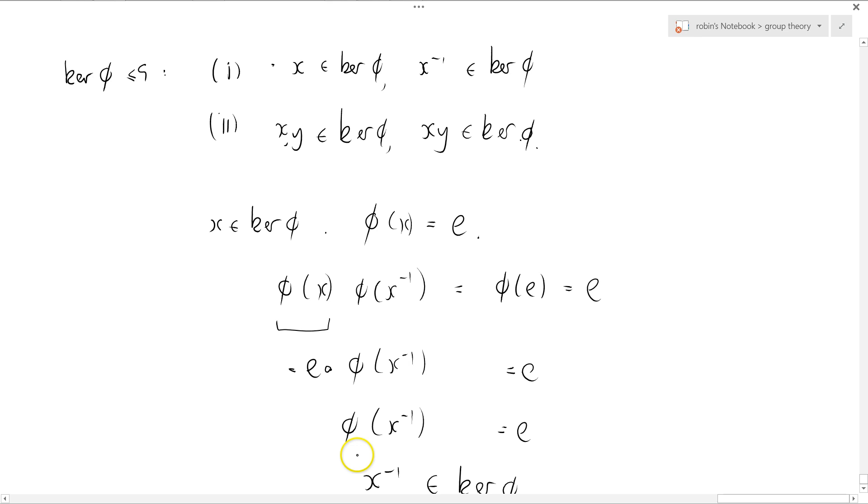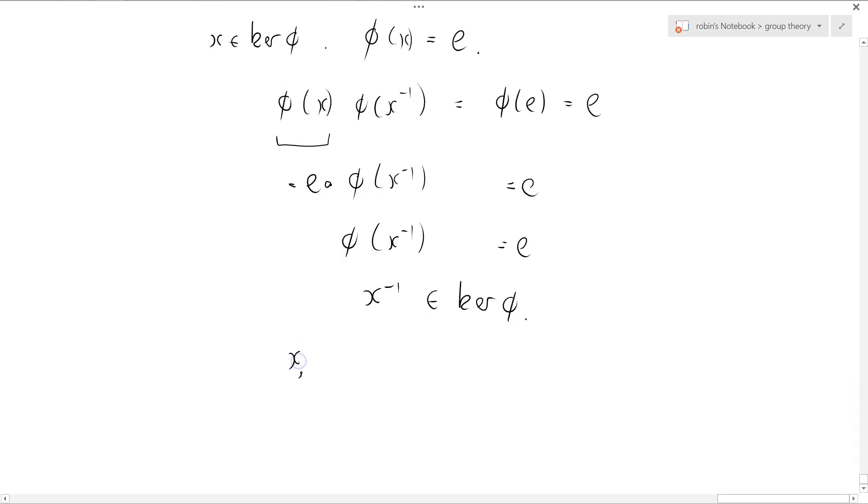So we've done the first bit. Now I'll do the second bit. X and Y separately are in ker phi. That tells me that phi of X equals E, and phi of Y equals E.